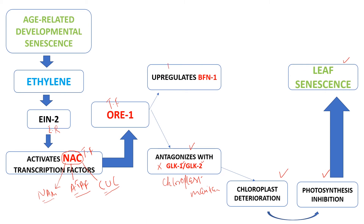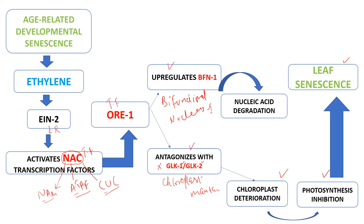In the second pathway, ORE1 upregulates BFN1. BFN stands for Bifunctional Nuclease 1. BFN1 is involved in nucleic acid degradation in the leaf, which ultimately leads to leaf senescence.